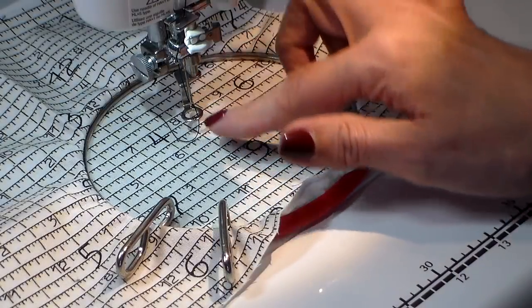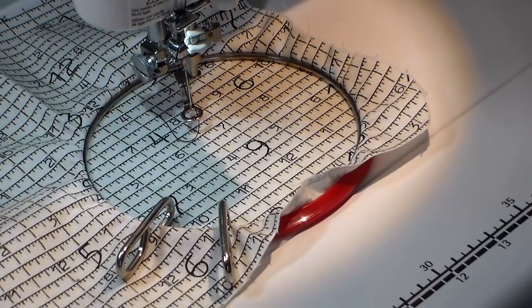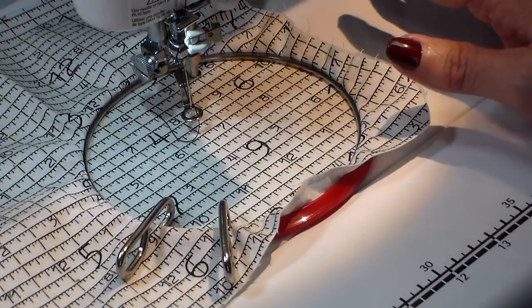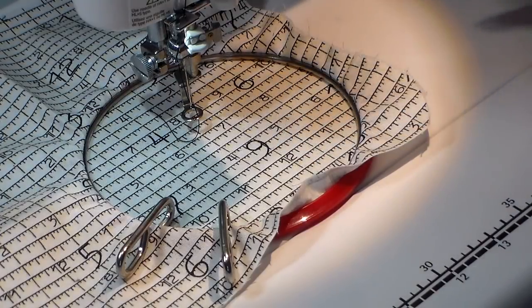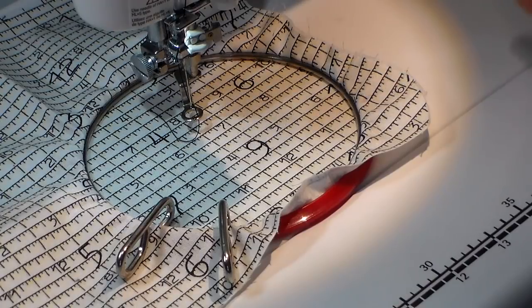I do have my free motion foot on. I have my feed dogs dropped. I have my stitch length set to zero. Sewing machines may vary on your settings for free motion, so just check your instructions and it should tell you what's right for your sewing machine.